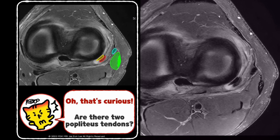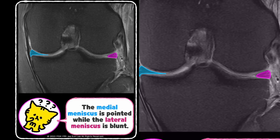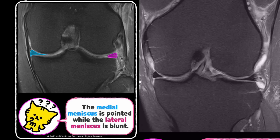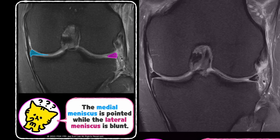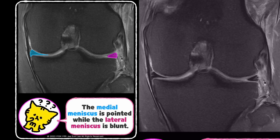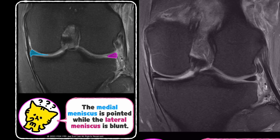Here's a hint: on the coronal image, we see that the medial meniscus is pointed, while the lateral meniscus appears blunted. The blunted morphology may be subtle, but if a meniscus looks truncated in a patient with no history of prior surgery, we should suspect a meniscal tear.